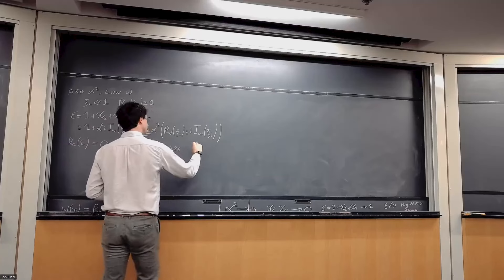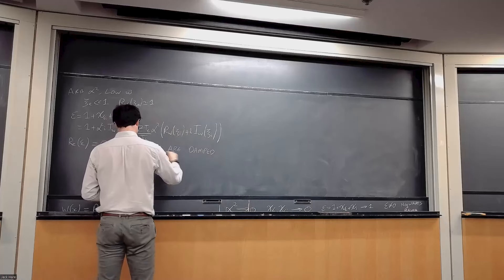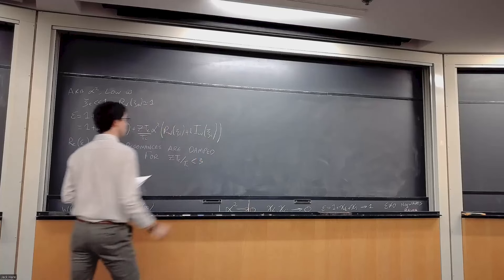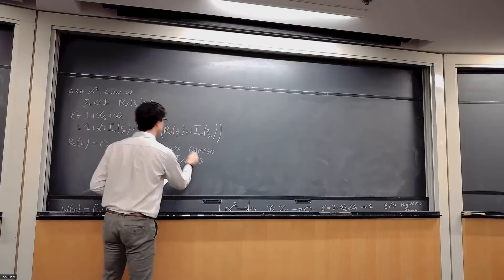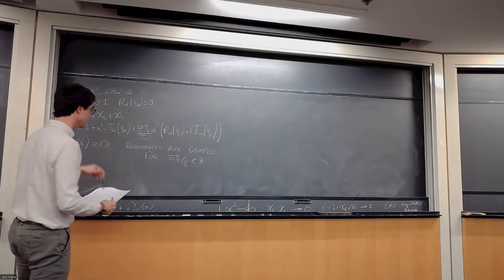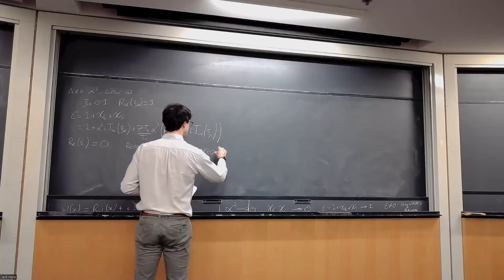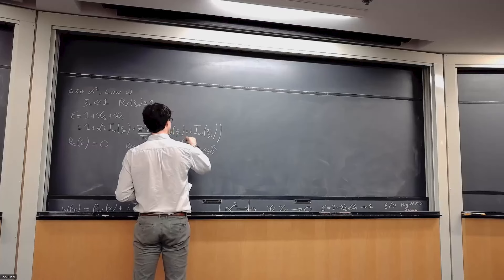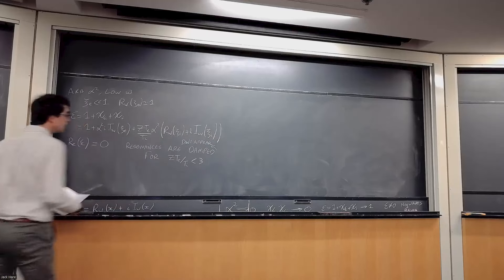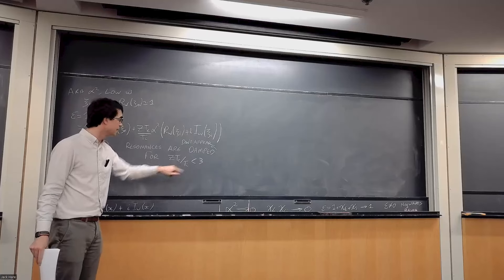I have not proved this here — you can prove it yourself by trying to solve that condition, and it is in Kruer's book. So we don't get resonances if ZTe/Ti < 3 — damped in this case means they simply don't appear. For a hydrogenic plasma with Z = 1, this would mean Te < 3Ti, i.e., ions hotter than electrons, which is not commonly encountered in practice.